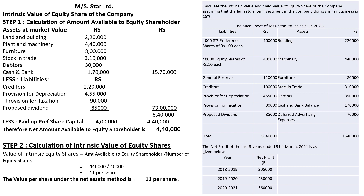The total of these four external liabilities comes to 7 lakh 30,000. Deducting 7 lakh 30,000 from 15 lakh 70,000 gives us 8 lakh 40,000. Then we deduct the paid-up preference share capital of 4 lakh (as given in the problem — 8% preference shares of rupees 100 each totalling 4 lakh). Therefore, the net amount available to equity shareholders is 4 lakh 40,000.